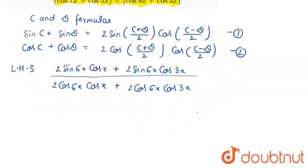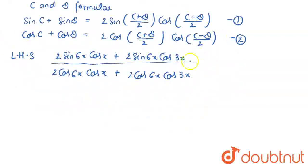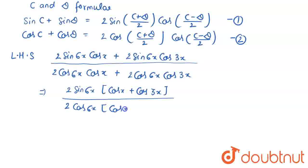So I have simplified my term, I have converged it to something that I can easily convert. So in the next step, you can write it as: from the numerator, you can take twice sin 6x common, and what remains is cos x plus cos 3x, whole divided by, in the denominator, you can see that you can take 2 cos 6x common, and what I am left with is cos x plus cos 3x.